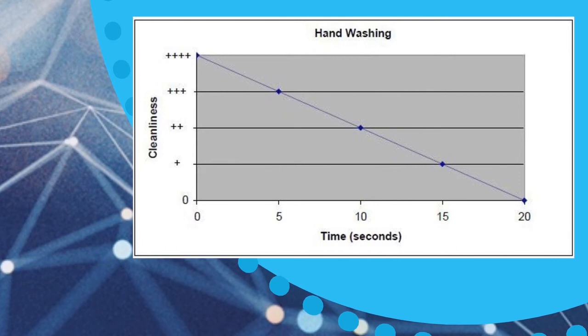Column graphs, however, are the most appropriate graph to use when the independent variable is discrete data. For example, instead of measuring time for hand washing, we were investigating the type of soap used for hand washing.